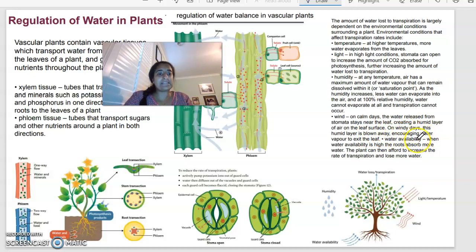Water availability is another one. So when water availability is high, the roots are going to absorb more of that water. The plant can therefore afford to increase the rate of transpiration and lose more water. So the more that it takes in, the more that it can let out. This diagram sort of sums up those factors over here.